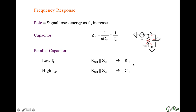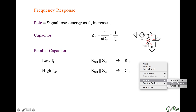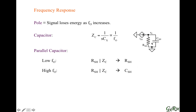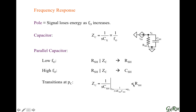In summary, at low frequencies the network looks like a resistor, and at high frequencies it looks like a capacitor. There's a transitional frequency where it transitions from resistor to capacitor — that's what we refer to as the pole. The pole is the transitional frequency, and that happens when the impedance of the capacitor is equal to the resistance of the resistor. The impedance through the capacitor is inversely proportional to frequency, and we solve for S to find that frequency. S is nothing but the 1/RC frequency.